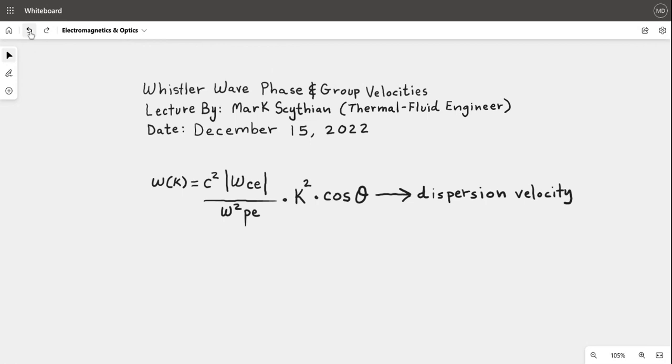You may have seen a problem similar to the wave function W(K), where the speed of light squared, c², times the absolute value of ωce divided into the frequency omega symbol, divided into ω²pe times the wave function squared K² times cosine.